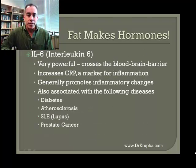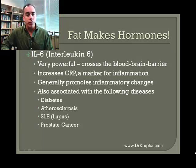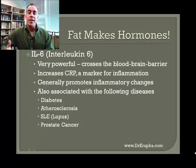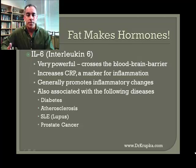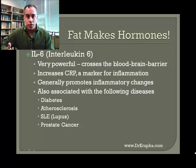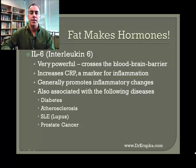Interleukin-6, or IL-6, is a very powerful hormone. It crosses the blood-brain barrier — not too many things do, as our body is very careful about maintaining a strict blood-brain barrier. It increases CRP, or C-reactive protein, which is a marker for inflammation, and it generally promotes inflammatory changes throughout the body. It's also associated with diabetes, atherosclerosis, lupus, and prostate cancer. So IL-6 is a nasty hormone you don't want circulating in your bloodstream.